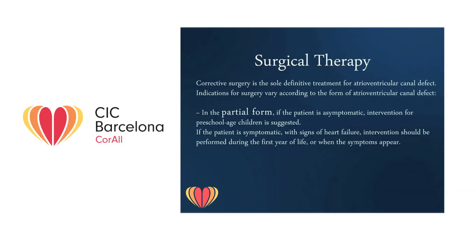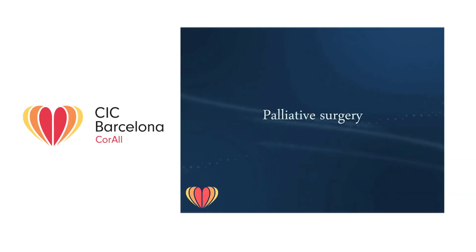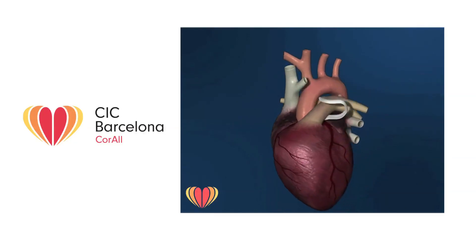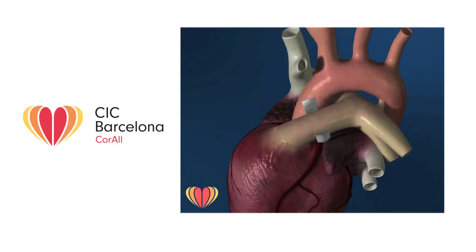In the partial form, if the patient is asymptomatic, intervention for preschool-aged children is suggested; if the patient is symptomatic with signs of heart failure, intervention should be performed during the first year of life or when symptoms appear. In the complete form, intervention should usually be performed during the fourth to fifth month of life to prevent irreversible pulmonary disease. During the first two months of life, in patients with intractable heart failure unresponsive to medical therapy, palliative surgical therapy — pulmonary artery banding — may be carried out to reduce pulmonary artery flow and pressure, allowing patients to reach the ideal age for corrective surgery.